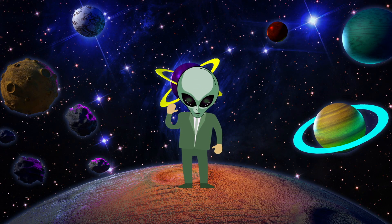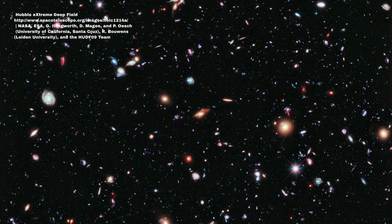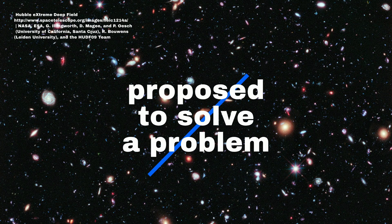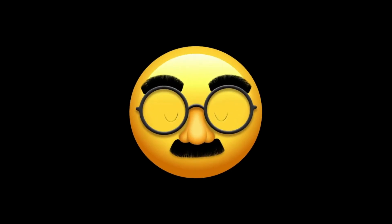Another possibility is that dark matter is made up of axions. Axions are hypothetical particles that were proposed to solve a problem in particle physics. They would interact with ordinary matter even less than WIMPs, making them even harder to detect.